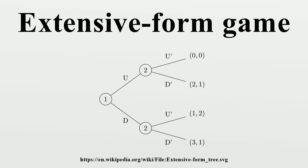An extensive-form game is a specification of a game in game theory, allowing explicit representation of a number of important aspects, like the sequencing of players' possible moves, the choices at every decision point, the information each player has about the other player's moves when making a decision, and their payoffs for all possible game outcomes. Extensive-form games also allow representation of incomplete information in the form of chance events encoded as moves by nature.